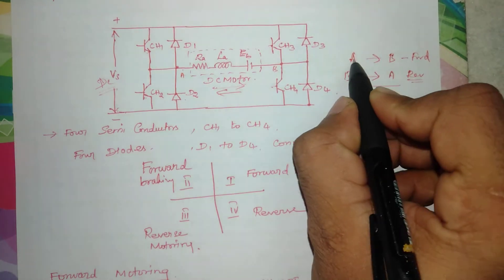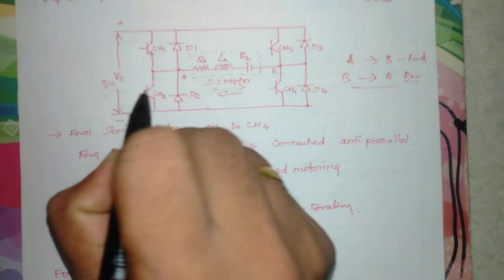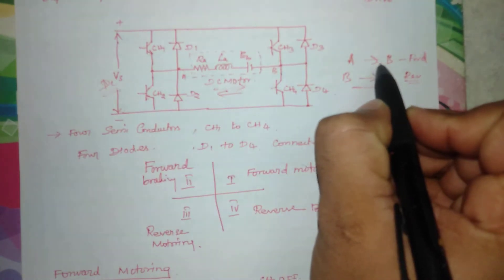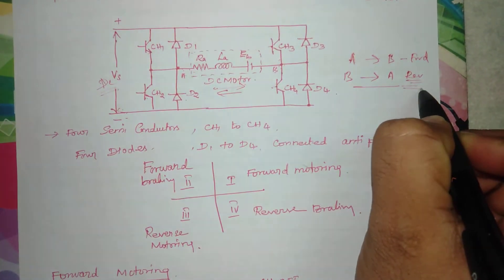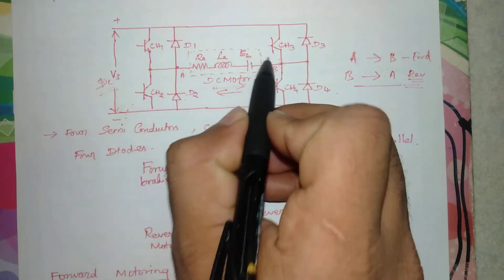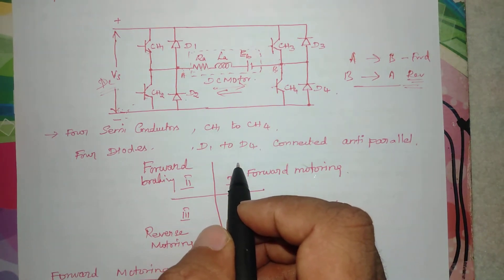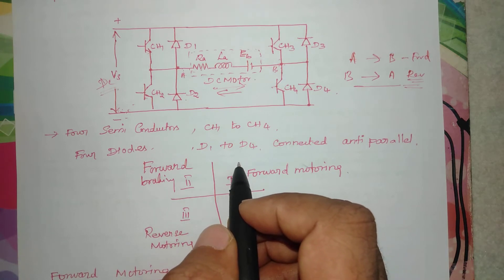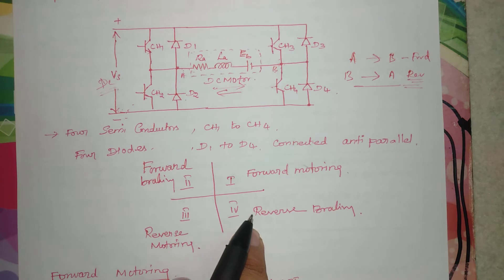Terminal A and terminal B are the two motor terminals. If A is connected to plus and B to minus, current flows A to B — forward direction. If B is connected to plus and A to minus, current flows B to A — reverse direction. This simple identification — A to plus, B to minus, and A to minus, B to plus — removes all confusion about which switch to turn on for each quadrant.